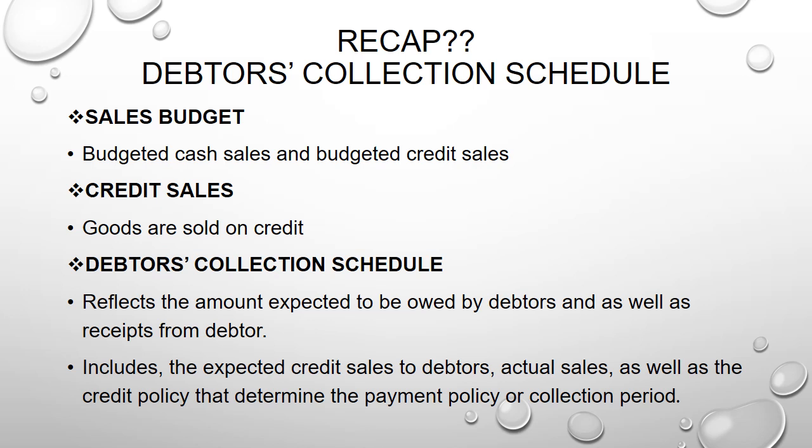Whenever you do a debtor collection schedule, there are things you have to look at. It should reflect the amount which is expected to be owed by debtors as well as the receipts from debtors. So we focus on the amount our debtors are going to owe us, and at the end, the amount we expect to receive from them. It should also include the credit sales to debtors, the actual sales, as well as the credit policy — that's the most important thing. The credit policy tells you how you're going to collect the money you're owed by debtors; it's more like a payment policy stating how your debtors will settle their accounts.